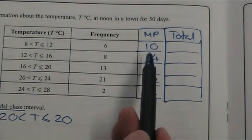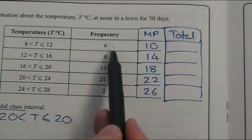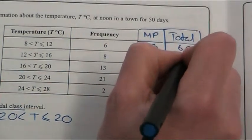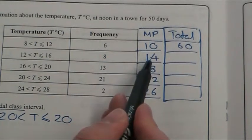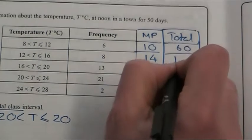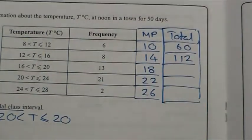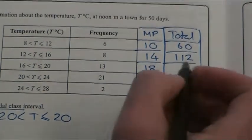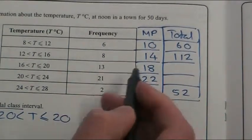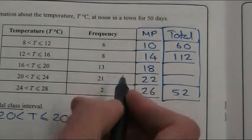Now, so we're assuming now that 6 of them were 10 degrees centigrade, which would give me a total of 60. 8 of them were 14, so 8 times 14 is 112. That's kind of the limit of my times table knowledge at this stage.